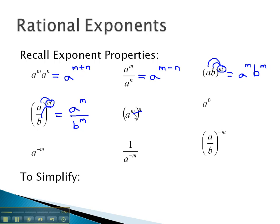As an exponent goes through parentheses, we will multiply the exponents together, a to the mn.